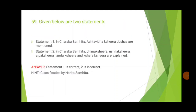The 59th question: Statement one — in Charaka Samhita, ashtavidha kshira doshas are mentioned. That is correct, and you should learn the treatment and lakshana of all eight. Statement two — ghana, ushna, alpa, amla, and kshara kshira are five kshira doshas mentioned in Charaka Samhita. That is incorrect; these five are actually mentioned in Harita Samhita, so statement two is incorrect.